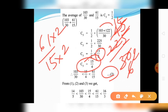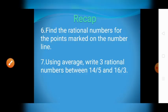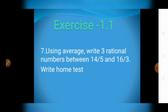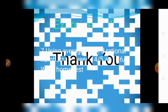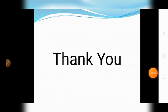From equations 1, 2, and 3 we get: 14 divided by 5 is less than 103 divided by 30 is less than 15 divided by 4 is less than 61 divided by 15 is less than 16 divided by 3. Therefore, three rational numbers between 14/5 and 16/3 are: 103 divided by 30, 15 divided by 4, and 61 divided by 15. Today's recap and homework: Exercise 1.1, question 7 — using the average method, write 3 rational numbers between 14/5 and 16/3. Thank you.